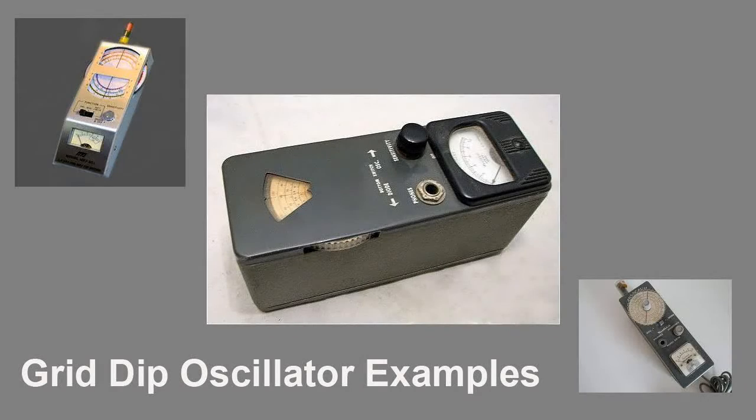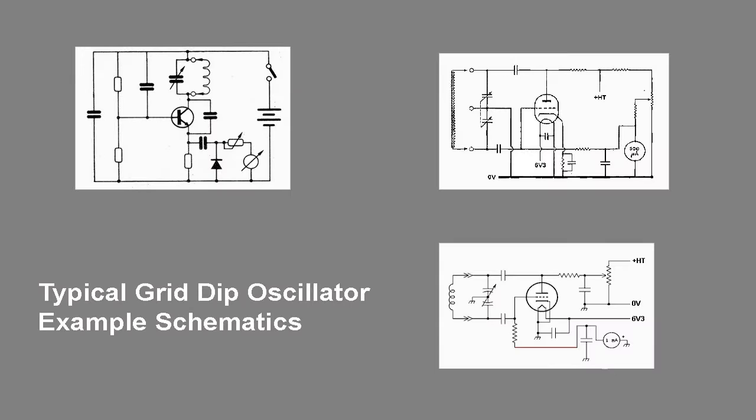If you're interested in radio, either amateur radio or building your own radio projects, one of the most useful tools you can have is a grid dip oscillator, also known as a grid dip meter or dip meter. It's surprising that relatively few people use them today. Unlike modern devices like spectrum analyzers, the grid dip oscillator or GDO is very cheap and simple to build yourself.